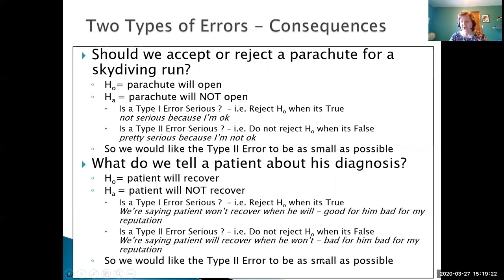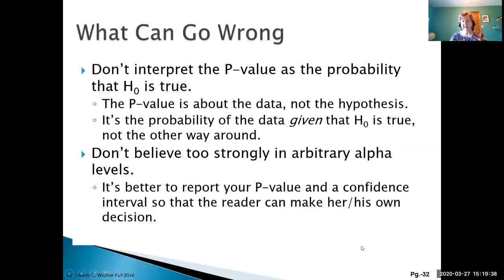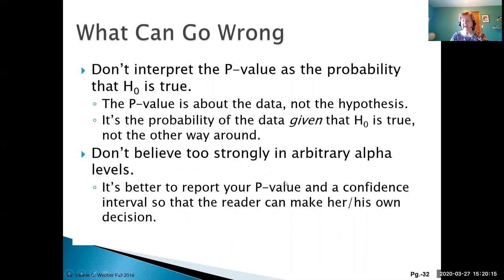In the questions we've done, we only ever choose an alpha level. Remember, alpha is the probability of making a Type I error, because typically we don't want to reject something when it's actually true. A couple of things that can go wrong with our p-value: it's not the probability that the null hypothesis is true — it's the probability associated with our data, the probability of our sample statistic happening. We also have to be very careful in choosing alpha levels. We've typically picked five percent, but we could also have picked ten, fifteen, or maybe twenty percent and come up with completely different decisions in some examples.